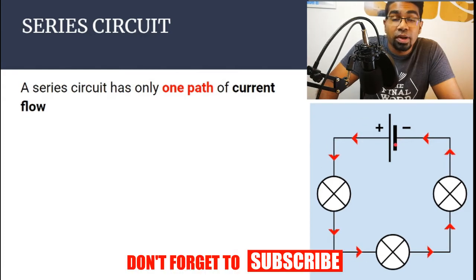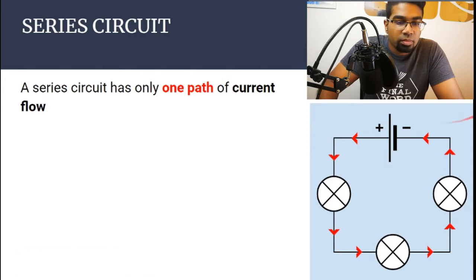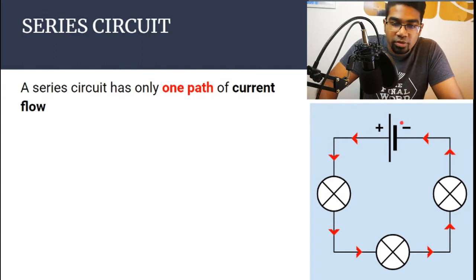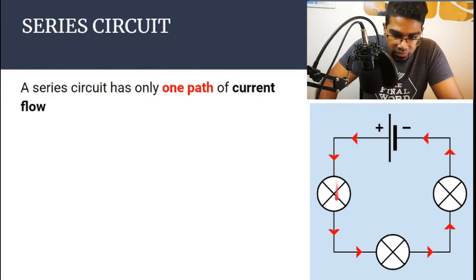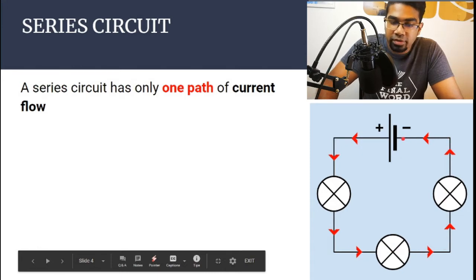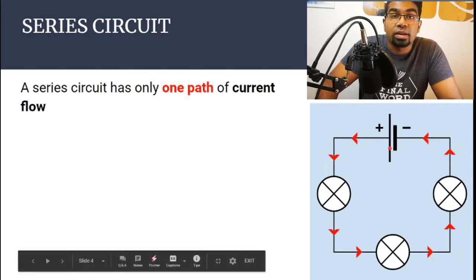Electrons are flowing from the negative terminal to the positive terminal. However, current is conventionally taken as flowing from the positive terminal to the negative terminal. So let's follow the path of current. The current path starts at the positive terminal, flows through the first bulb, then through the second bulb, through the third bulb, and back to the negative terminal. There is only one path that the current can take.